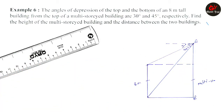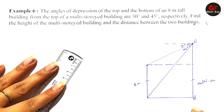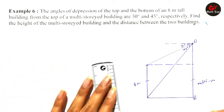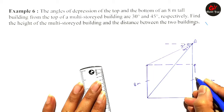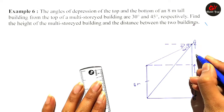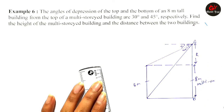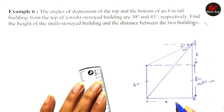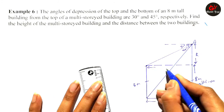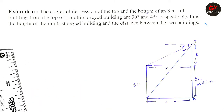This is our 8-meter tall building, so this part is 8 meters. We assume the horizontal distance between the two buildings is x. Since the buildings are parallel, this corresponding part will also be x.